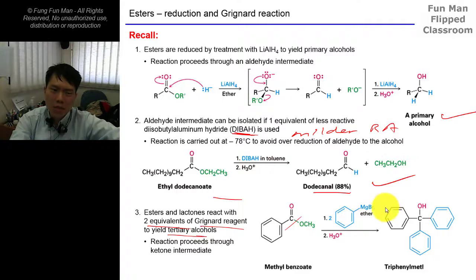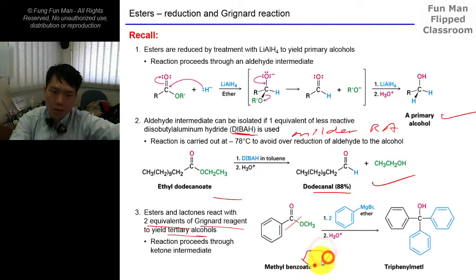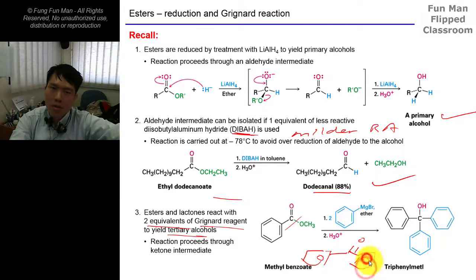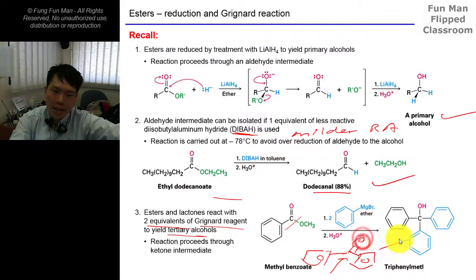The Grignard reagent acts as the nucleophile. Step one is a nucleophilic substitution, so we get a diphenyl ketone. But of course we cannot isolate this because it is still very reactive, so the next molecule of Grignard reagent goes in and attacks, giving you the final product.